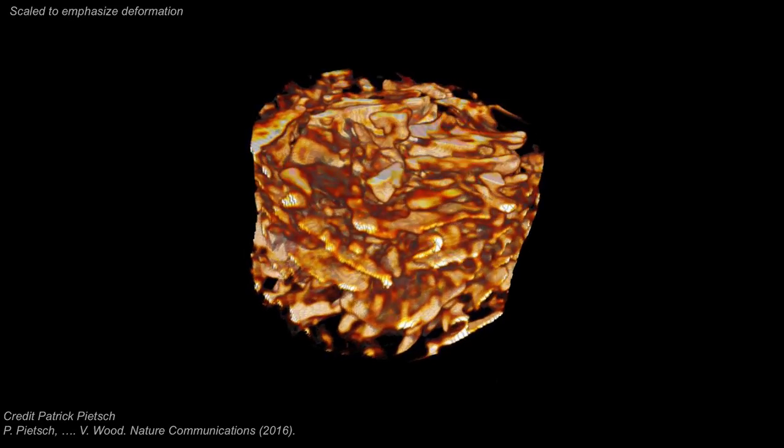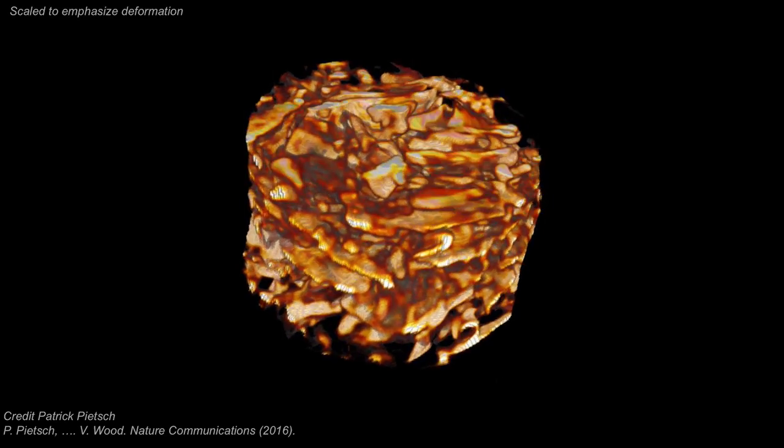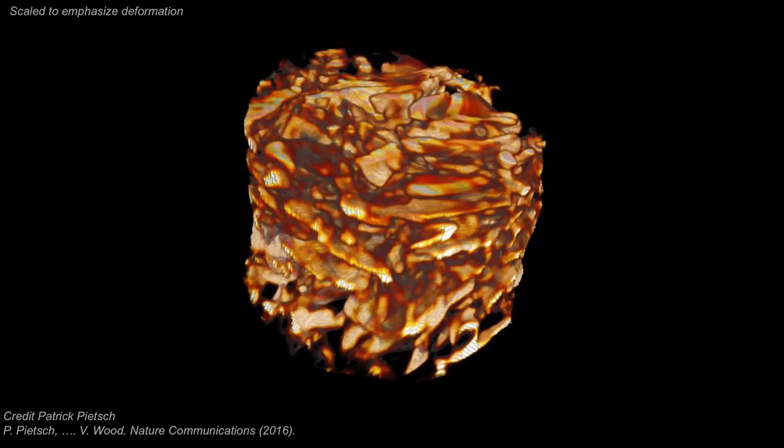When you charge your battery, you're inserting lithium into these graphite flakes, and they expand. And when you discharge your battery, lithium leaves the graphite particles, and they contract. And manufacturers like graphite because, in addition to being low-cost, it can withstand this immense mechanical strain every time you charge and discharge your cell.